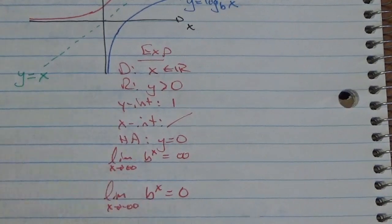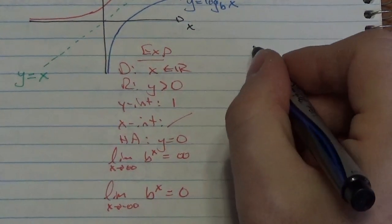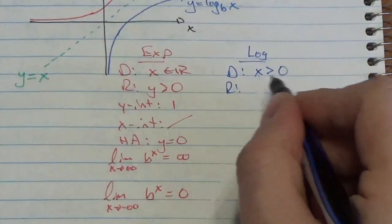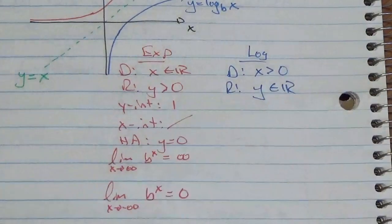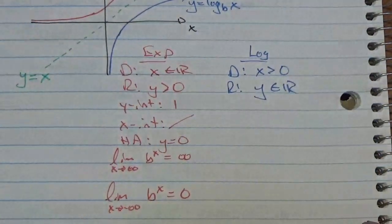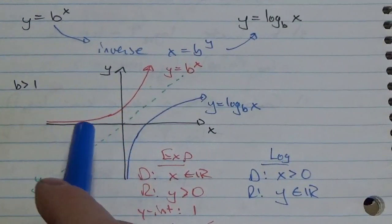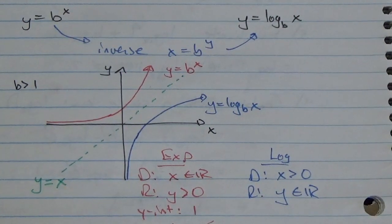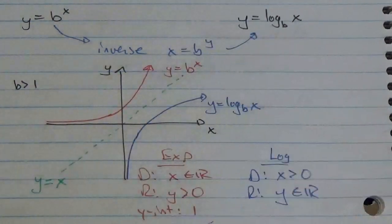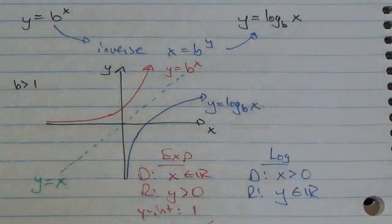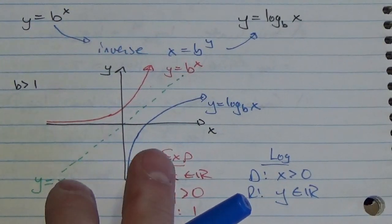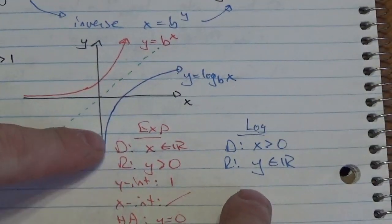Now compare that to our logarithmic function. Its domain is going to be x is greater than 0, whereas its range is going to be y is an element of the reals. That is a little something interesting — exponential growth is really quite quick. Logarithmic growth, on the other hand, given that a logarithm is the inverse of an exponential, is very, very slow.